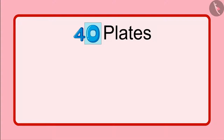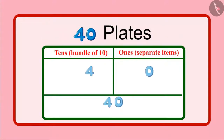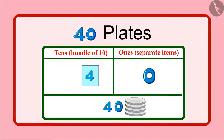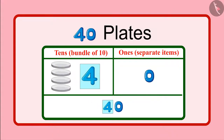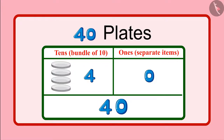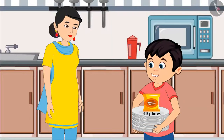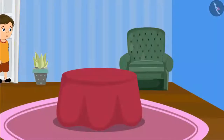Chotu asks: but zero is also written here, what about it? His mother explains: the zero is written in the units place, which means not a single loose plate. And the four is written in place of tens, meaning four groups of 10 plates — so a total of 40 plates are in the packet. Chotu says: okay, now I have understood!